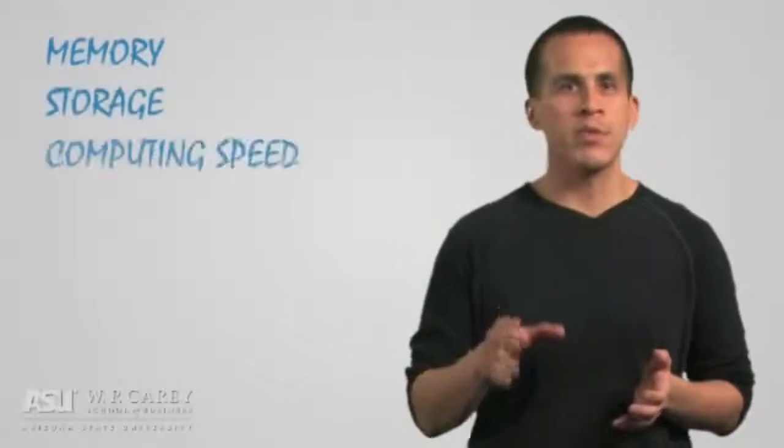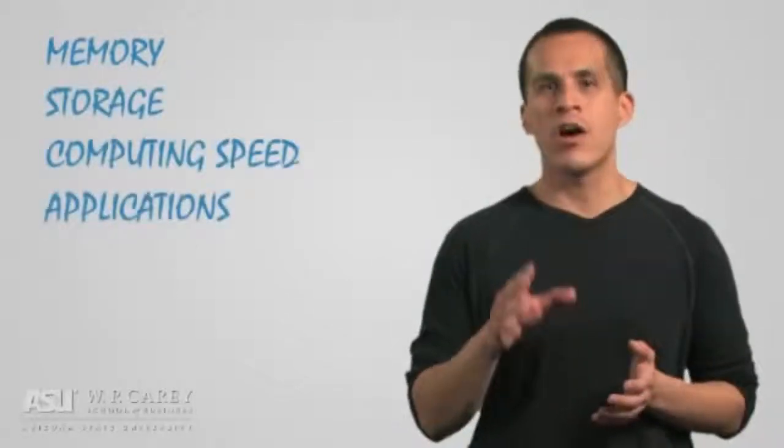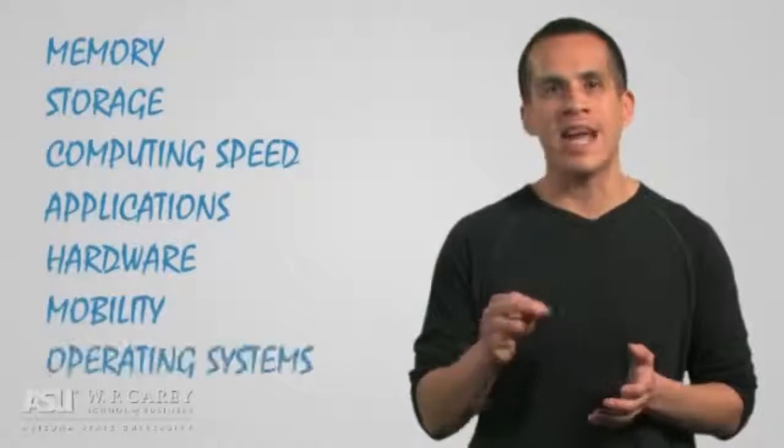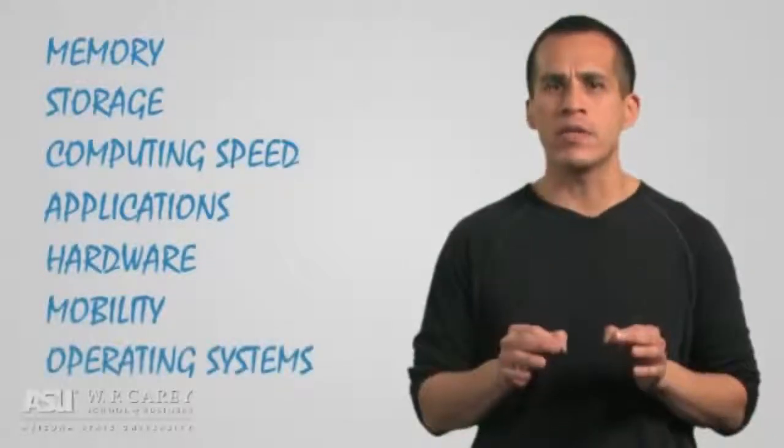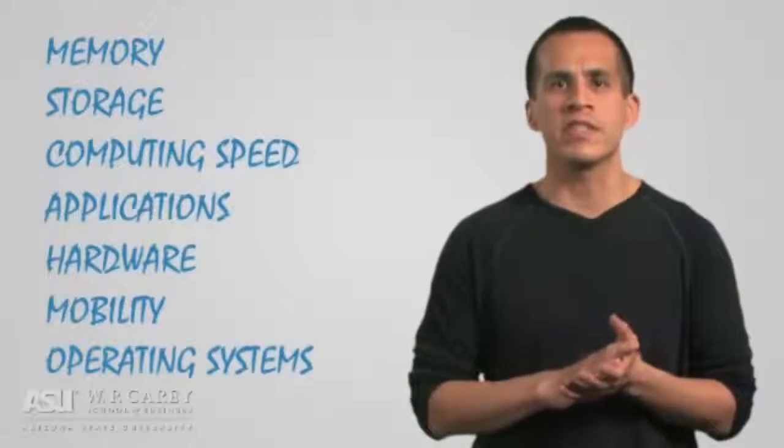Memory, storage, computing speed, applications, hardware, mobility, and the operating system. These are the key components of the organization's central nervous system.